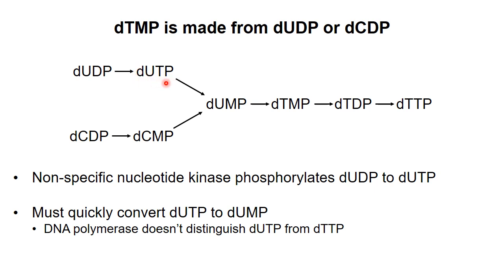This is a problem because DNA polymerase does not distinguish between dUTP and dTTP. So, to prevent uracil from being incorporated into DNA, the dUTP is quickly dephosphorylated to dUMP. This nucleotide can be methylated to make dTMP, which is then phosphorylated to give dTTP. It seems awkward to dephosphorylate the nucleotide and then rephosphorylate it, but this is the price of having a nonspecific nucleotide kinase available in the cell.